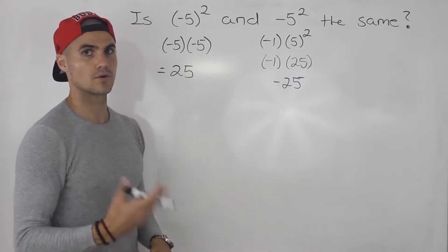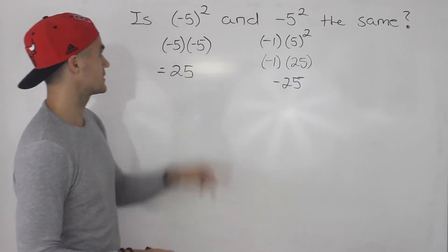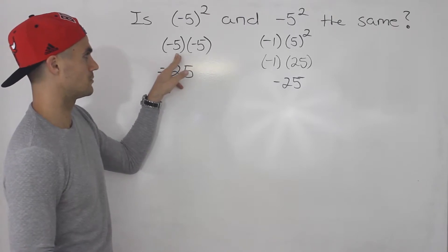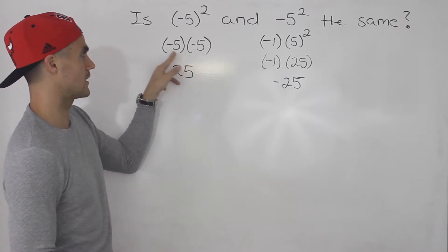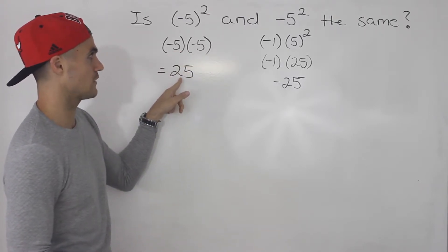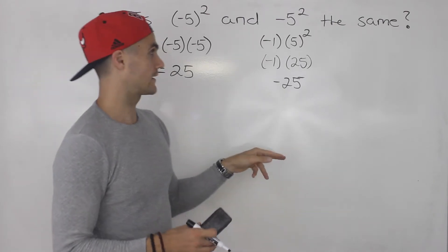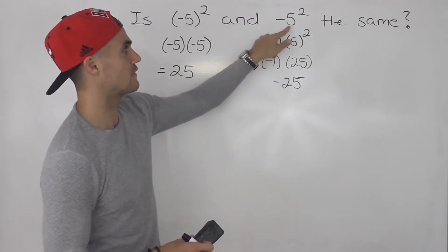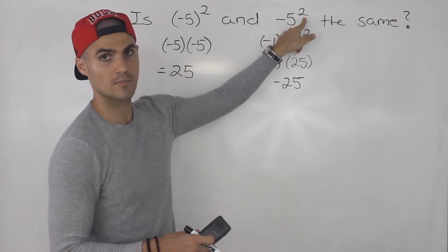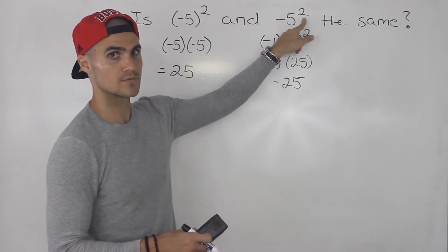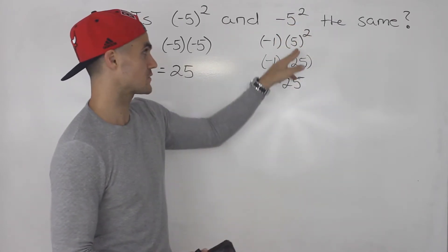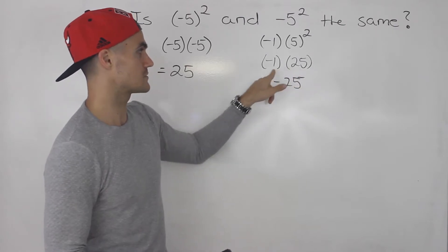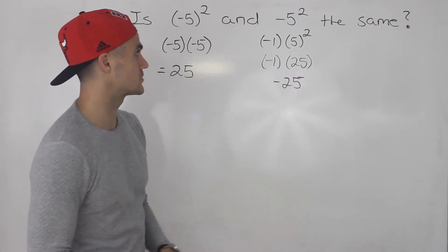So just be careful. Notice the difference: when it's in brackets, you multiply negative five times negative five, which is 25. But when it's not in brackets, there's a negative one in front, and only the positive five is to the power of two. So you've got to do BEDMAS — do the exponents first. Five squared is 25, times negative one gives us negative 25.